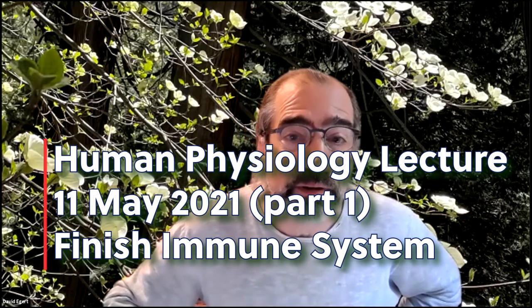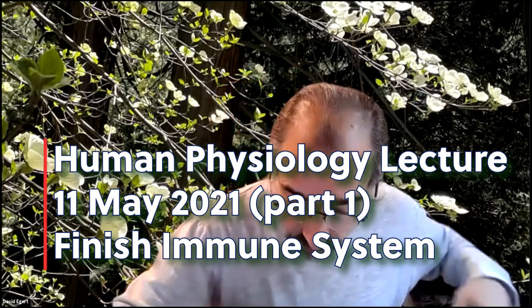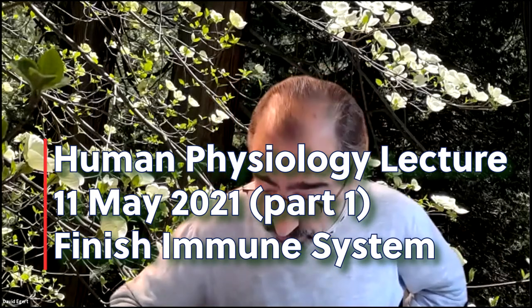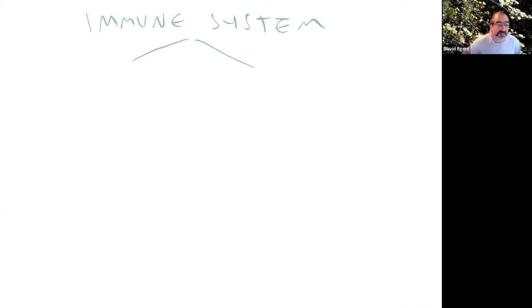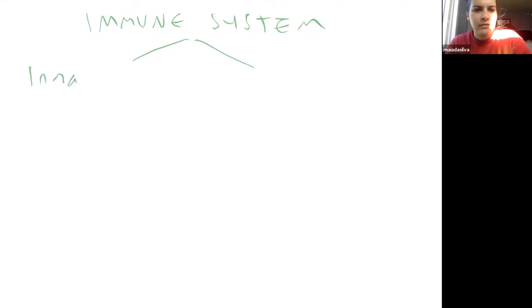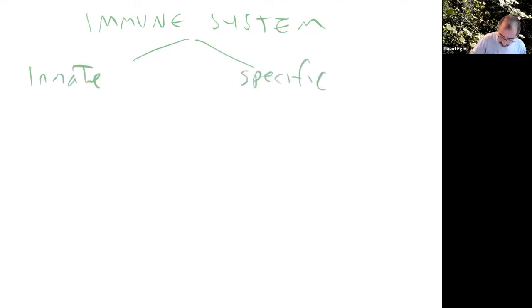There's obviously no warm-up today because we've got the quiz coming up, but we probably still should do a little bit of review of what we've been covering. Last class we were diving into the immune system, and we talked about how we were splitting it up into different categories or divisions. The two main divisions are innate and specific — also called general defenses and adaptive defenses.